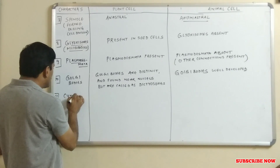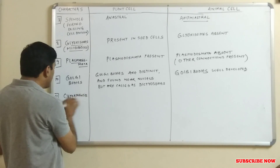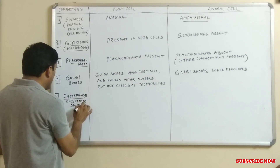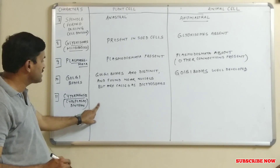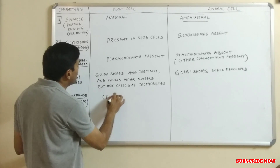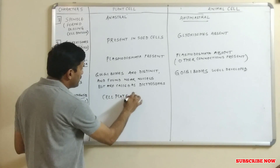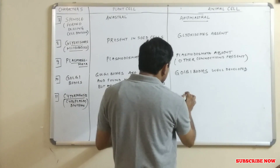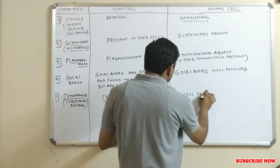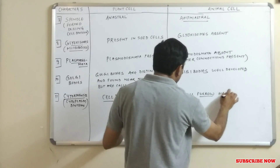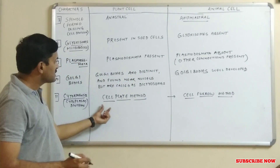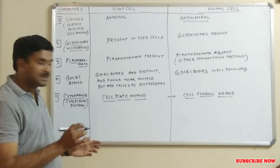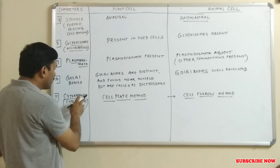The next point is cytokinesis, which means cytoplasm division. In the plant cell, cytokinesis occurs by the cell plate method. In the animal cell, cytokinesis occurs by the cell furrow method. So there are two modes of cytoplasm division: cell plate method for plant cells and cell furrow method for animal cells.